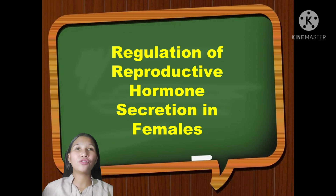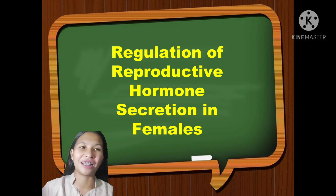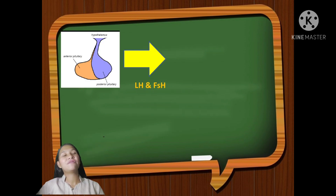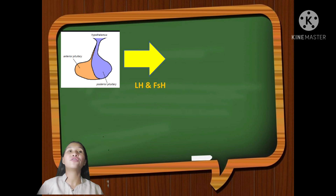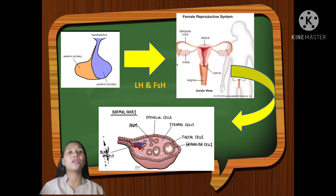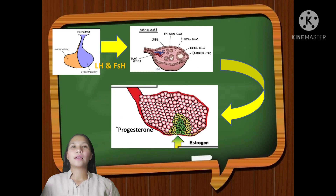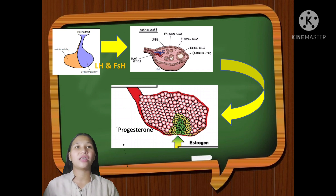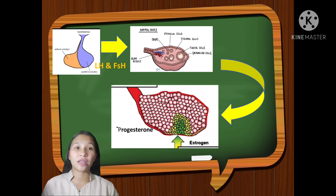Let's go to the regulation of reproductive hormone secretion in females. The female reproductive system is also regulated by hormones. The gonadotropin hormone from the hypothalamus stimulates the pituitary gland to release follicle-stimulating hormone and luteinizing hormone into the ovaries. These hormones stimulate the ovaries to produce estrogen and progesterone.